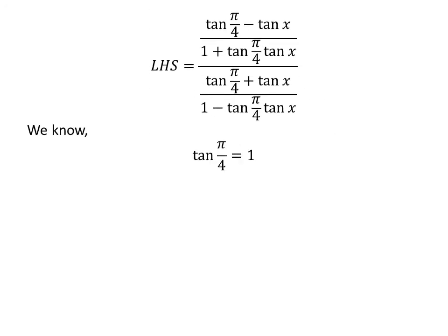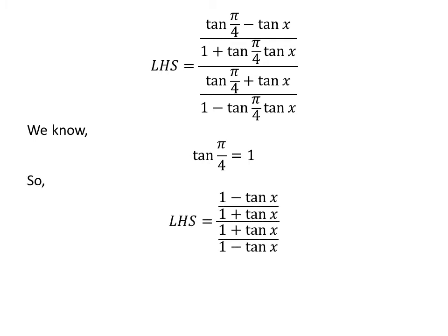We know the value of tangent of π/4 is equal to 1. Plugging this value into the above expansion of the left-hand side gives us: LHS = (1 − tan x) / (1 + tan x), divided by (1 + tan x) / (1 − tan x), which simplifies to the square of (1 − tan x) / (1 + tan x).